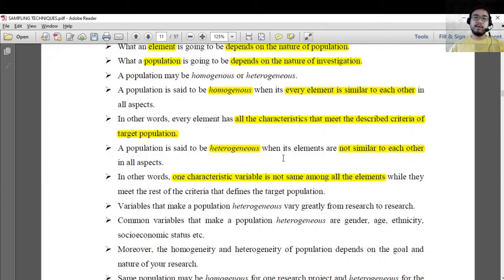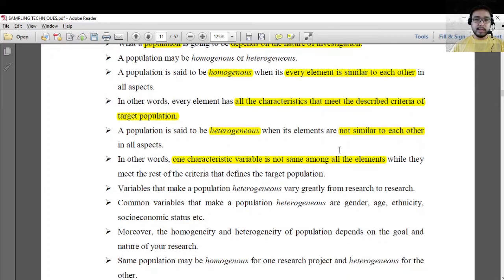How do we contextualize this? For example, all of the elements we're referring to here are students. It becomes homogeneous if they are all similar, while it is heterogeneous if there's a different aspect when it comes to them being students.